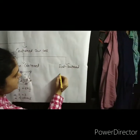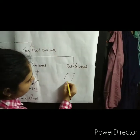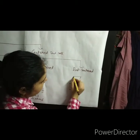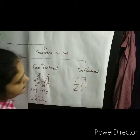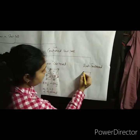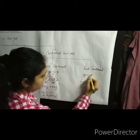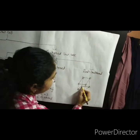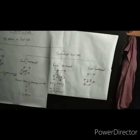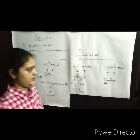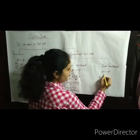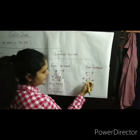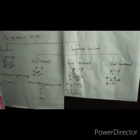In an end centered unit cell, for example in this cube, there are atoms at the eight corners and also at two opposite faces — for example, the upper face and the bottom face opposite to it.